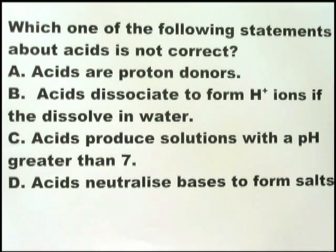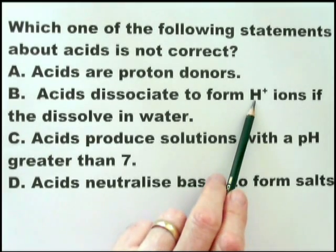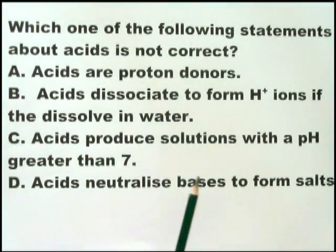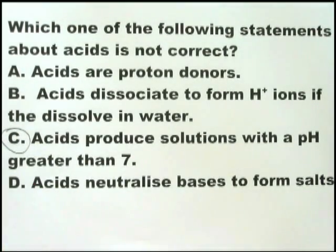This is another question which I see as very easy. Acids are proton donors, that is true. Acids dissociate to form hydrogen ions if they dissolve in water, that is true. Acids produce solutions with a pH greater than 7—no. You must know immediately that pH greater than 7 is not an acid, it's an alkali. Acids neutralize bases to form salts, that is true.